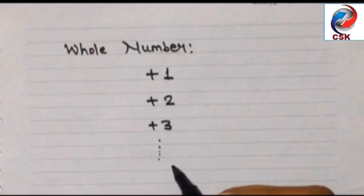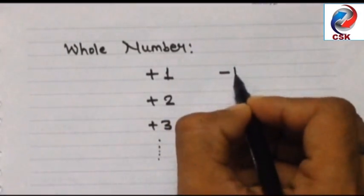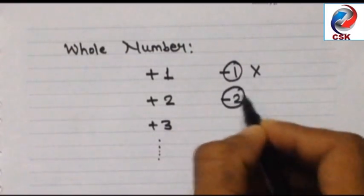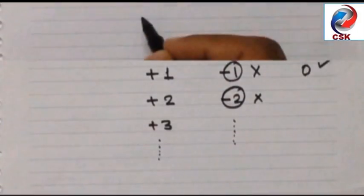But negative numbers minus 1, minus 2, minus 3, minus 4, all these negative numbers are not whole numbers. But 0 is a whole number because this does not contain any kind of sign.